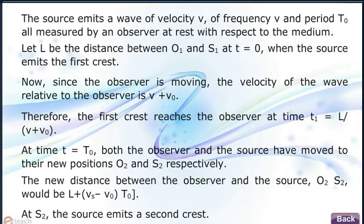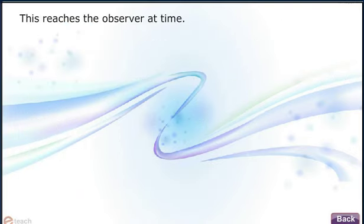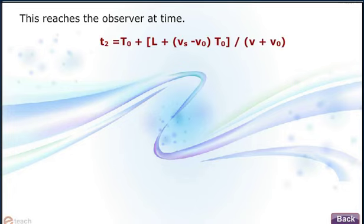At S2, the source emits a second crest. This reaches the observer at time T2 equals T0 plus [L plus (Vs minus V0)T0] upon (v plus V0).